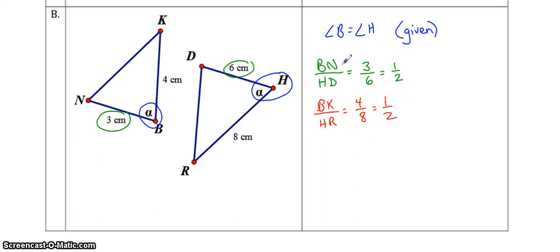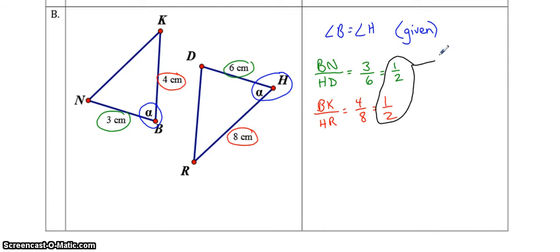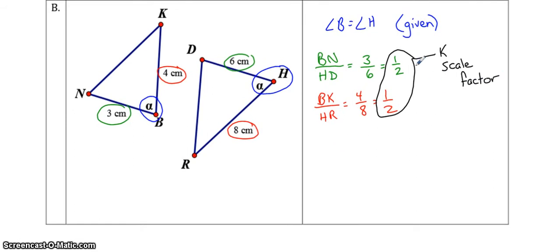With similar triangles, you're not trying to prove that sides are equal — you're trying to prove that the ratios of the sides are equal. So if this side is half as big as this side, then this side has to be half as big as this side. This value is your K value, which is your scale factor. The scale factor tells you what the ratio of the sides are — in this case, this triangle is half as big as this triangle.